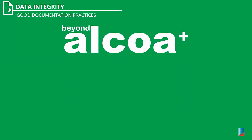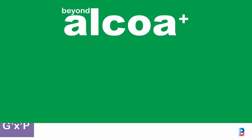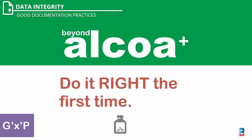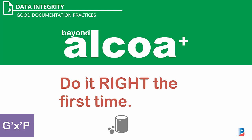Having integrity means doing the right thing in a reliable way by following good documentation practices. While manufacturing a product, it is better to perform an operation correctly the first time rather than have to rework on it to correct mistakes. This can avoid frustration, problems, and possible regulatory issues caused by inadequate documents.